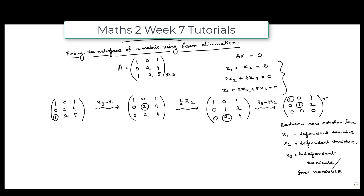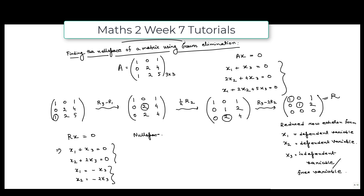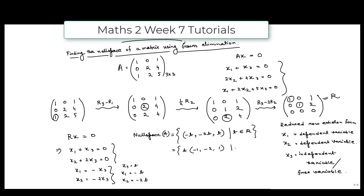If I name this new matrix R, then the new system of equations Rx = 0 becomes: x1 + x3 = 0 and x2 + 2x3 = 0. This gives us x1 = -x3 and x2 = -2x3. So if we let x3 = t, then x1 = -t and x2 = -2t. The null space of A is the set {(-t, -2t, t) : t ∈ ℝ}, which can also be written as t·(-1, -2, 1) for t ∈ ℝ.